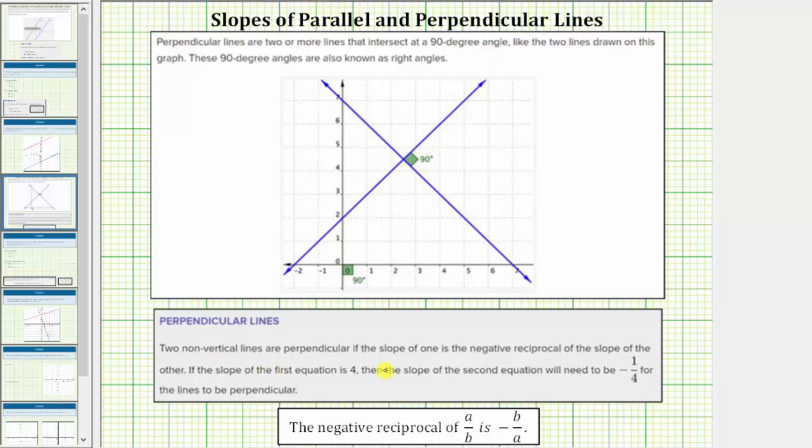Two non-vertical lines are perpendicular if the slope of one line is the negative reciprocal of the slope of the other. For example, if one line has a slope of a/b, a perpendicular line must have a slope of -b/a. These values, a/b and -b/a, are negative reciprocals, and this is the relationship between the slopes of perpendicular lines.